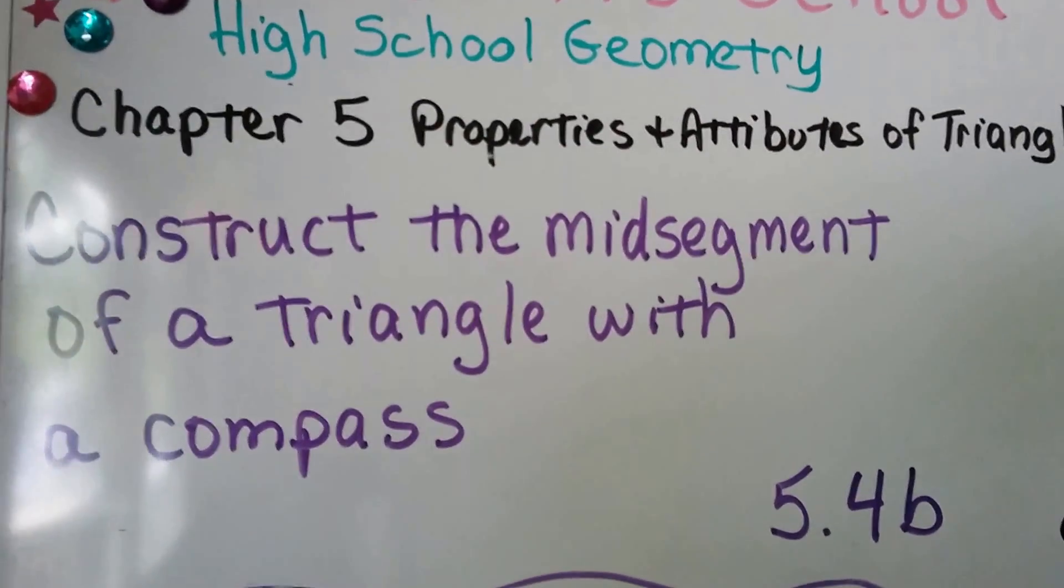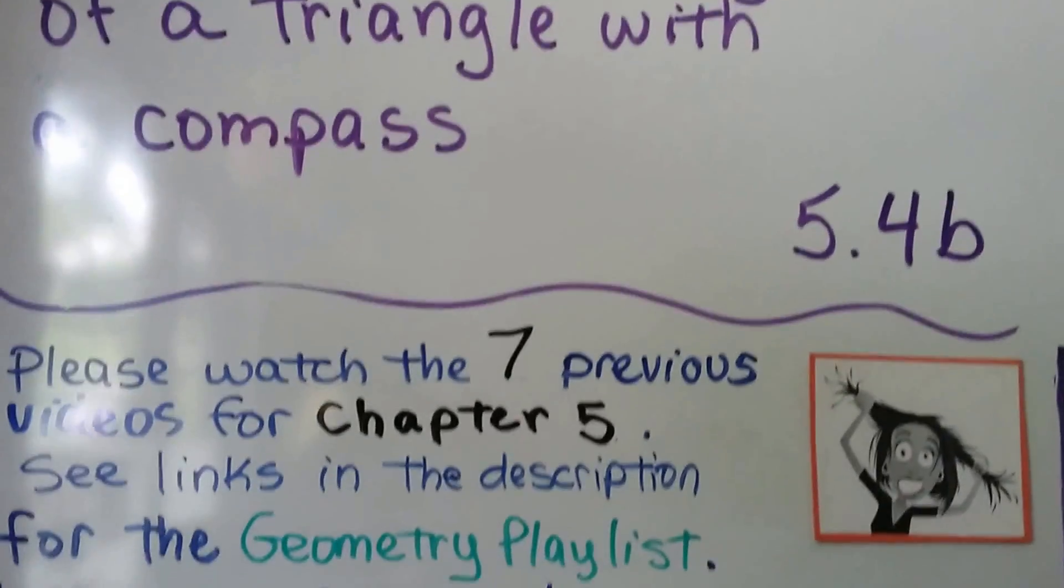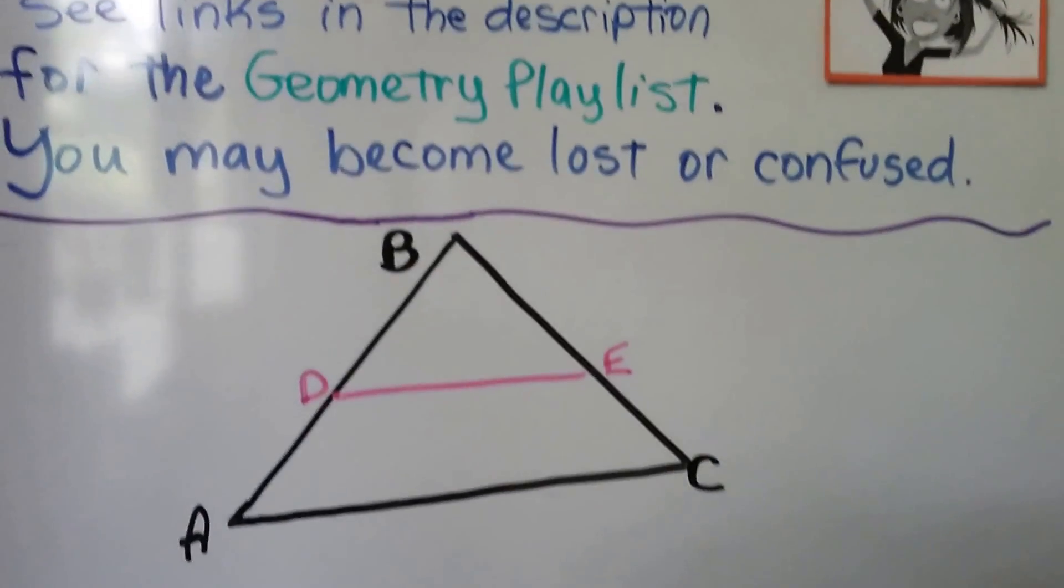Construct the mid-segment of a triangle with a compass. This is 5.4b. We have seven previous videos for chapter 5 that are in the geometry playlist.